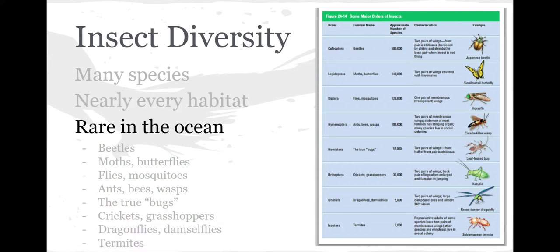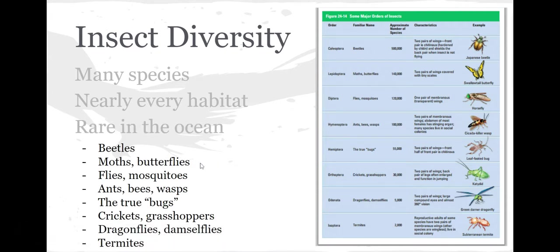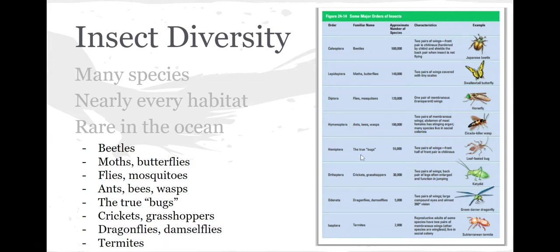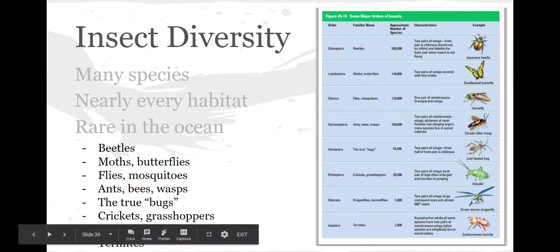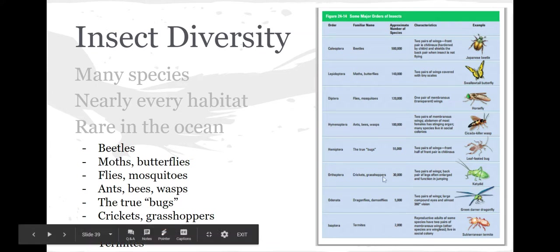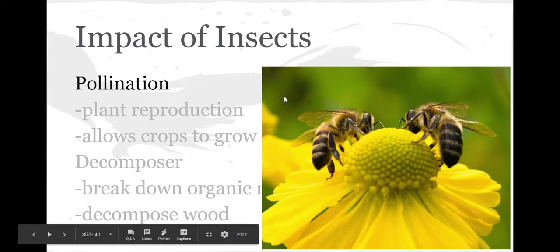Insects are typically rare in the ocean; we don't really find them there very often. But here's the list: we've got beetles, moths and butterflies, regular flies and mosquitoes, ants, bees and wasps, things we call true bugs like the leaf-footed bug or box elder beetles, crickets and grasshoppers, dragonflies, damselflies, and termites. You can see the numbers of species: there are over 500,000 species of beetles and 140,000 species of butterflies and moths. There are lots and lots of insects out there.